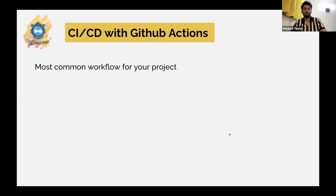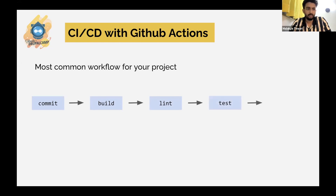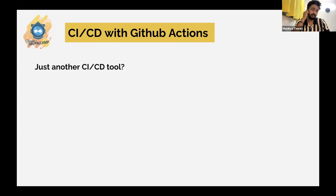The most common workflow for any project is: you commit your code, that builds your application, you lint your files with phpcs, jslint, or CSS linting, you test the application with PHPUnit or Behat, and once everything is fine you deploy your code. That's the general CI/CD pipeline.